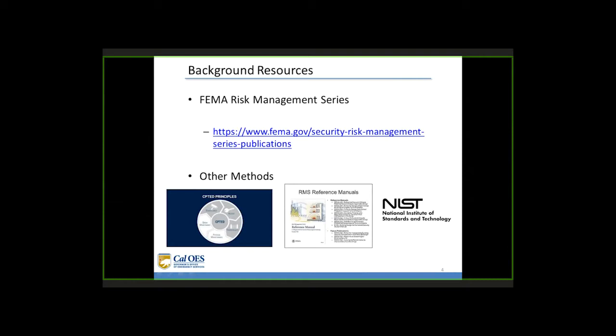There are many methods to establish effective security for an organization. Some derive from standards set by industry security associations such as ASIS, some from guidelines published by governmental organizations like the National Institute of Standards and Technology in the area of cybersecurity, or as a result of studies in practice such as Crime Prevention Through Environmental Design. Each of these are practical and defensible processes for determining risk and adopting measures to reduce that risk.